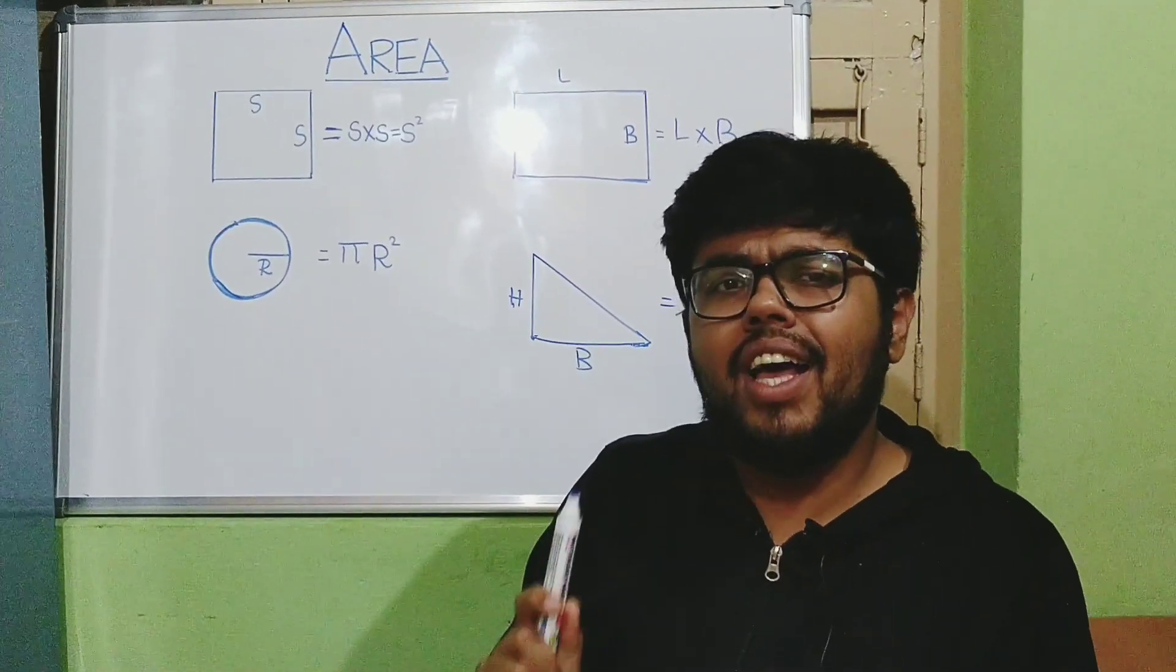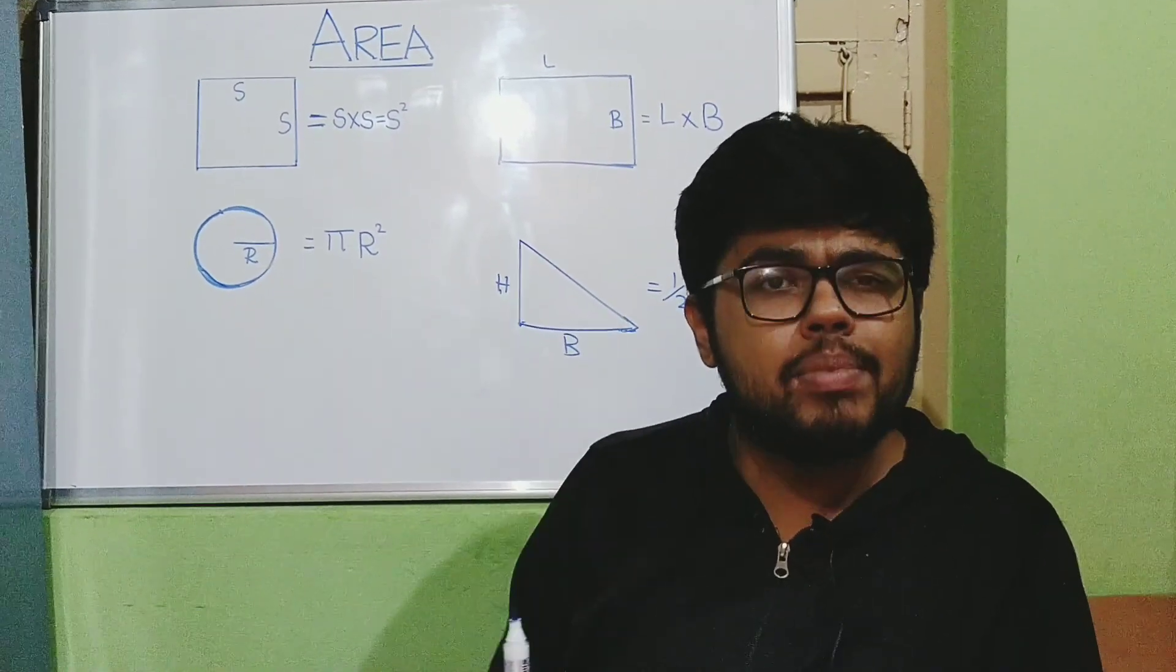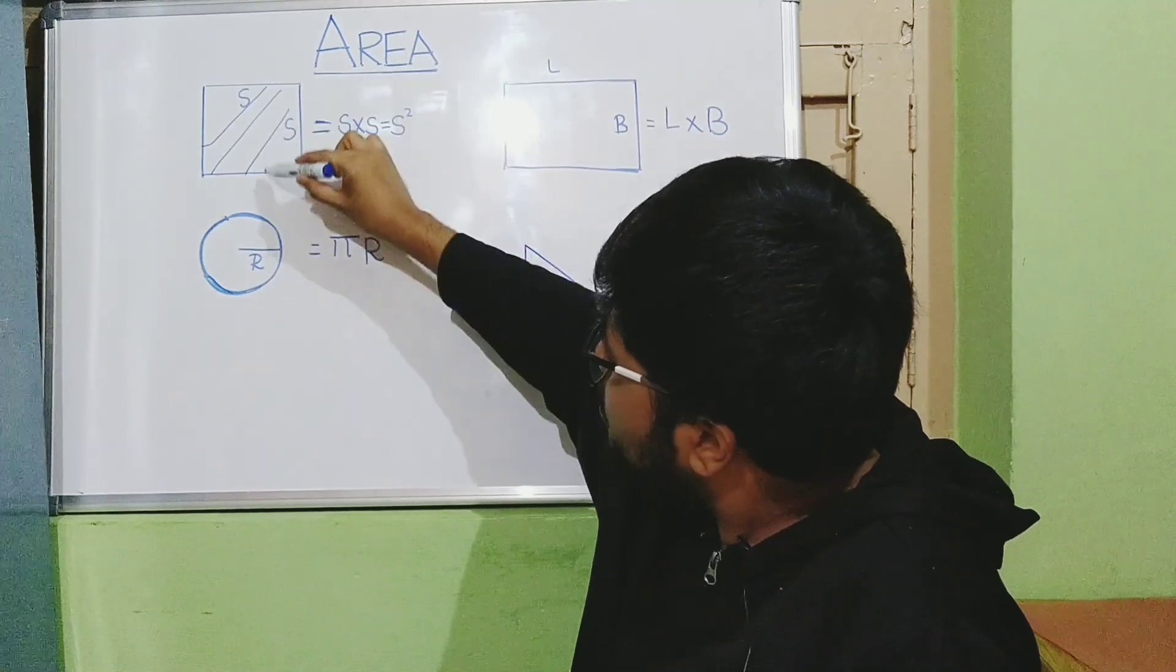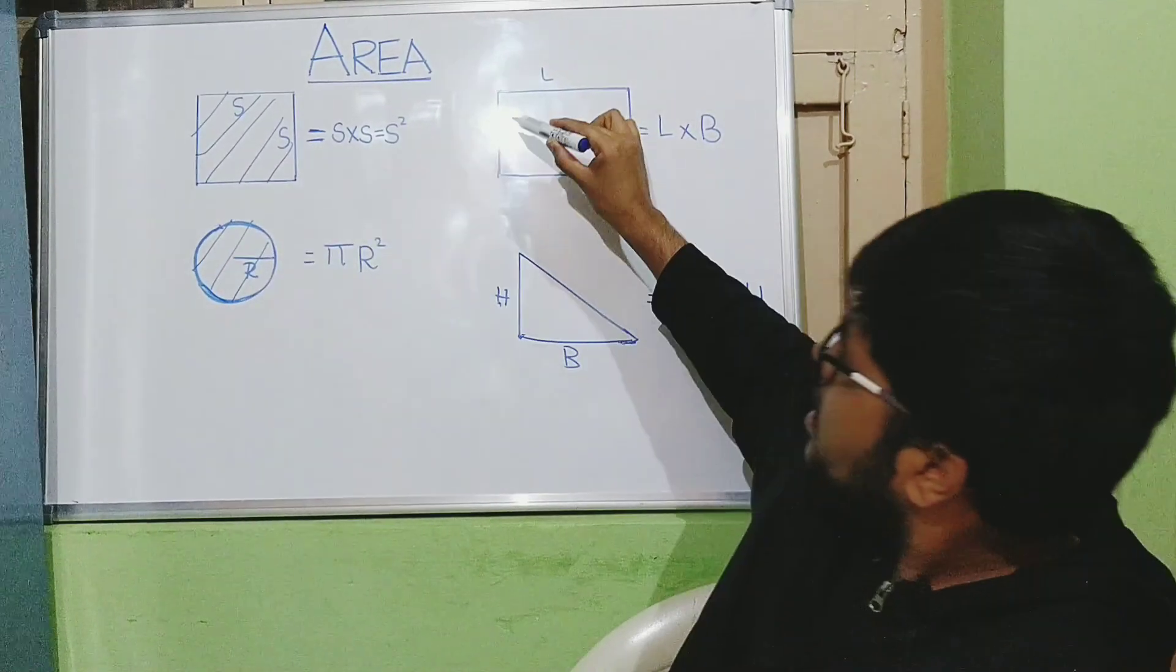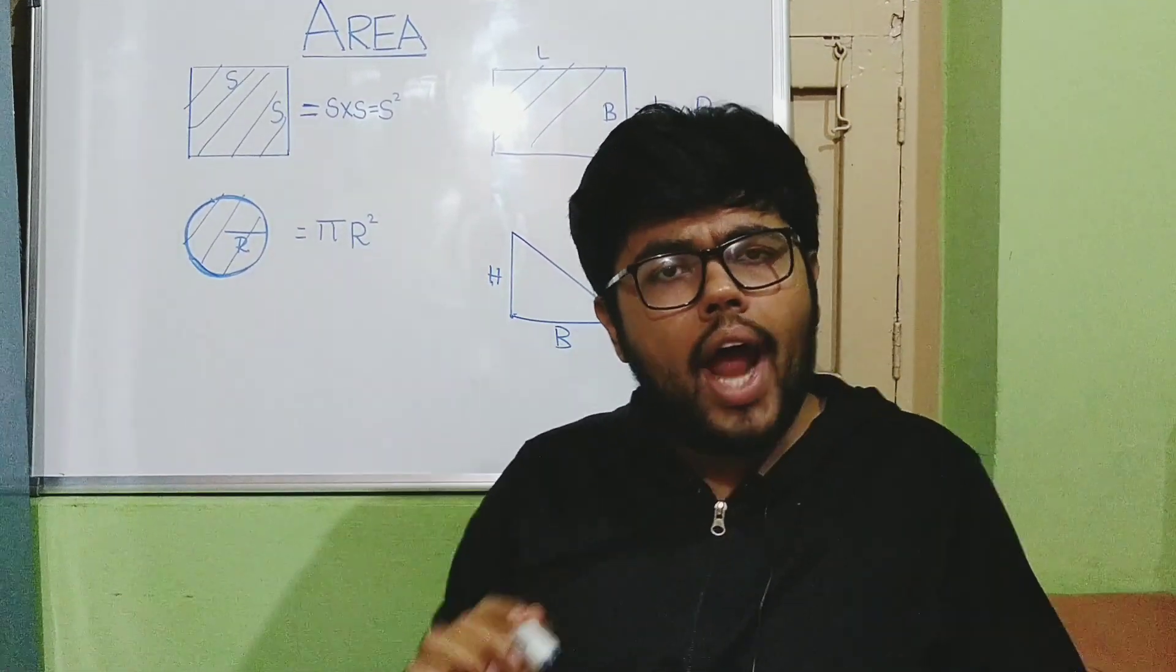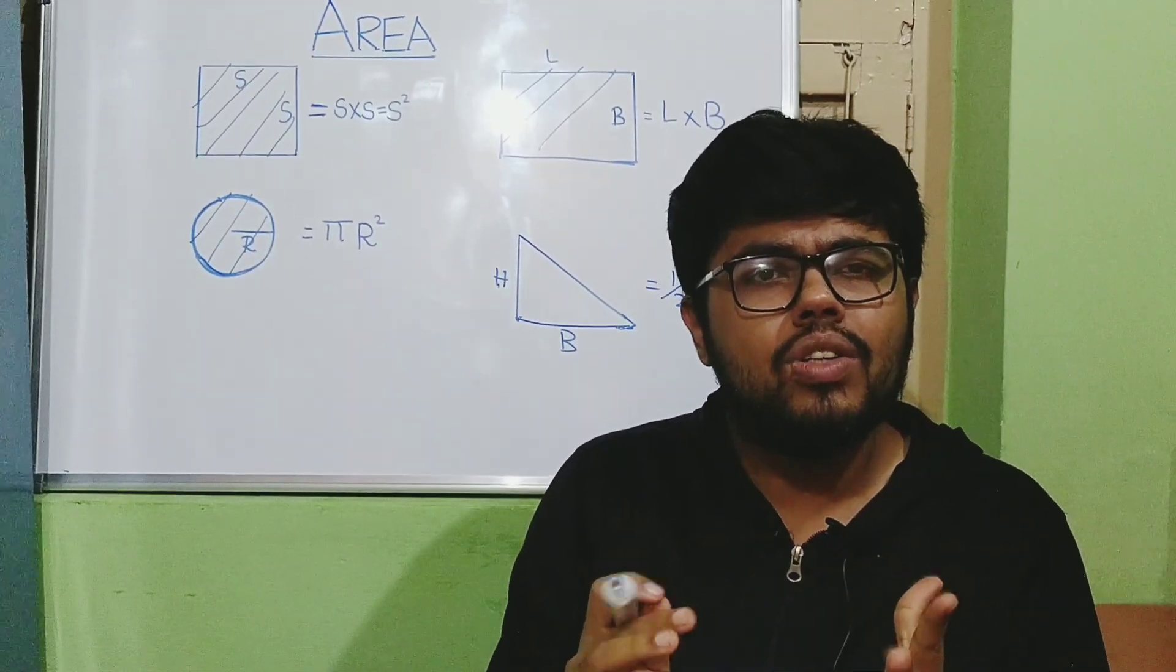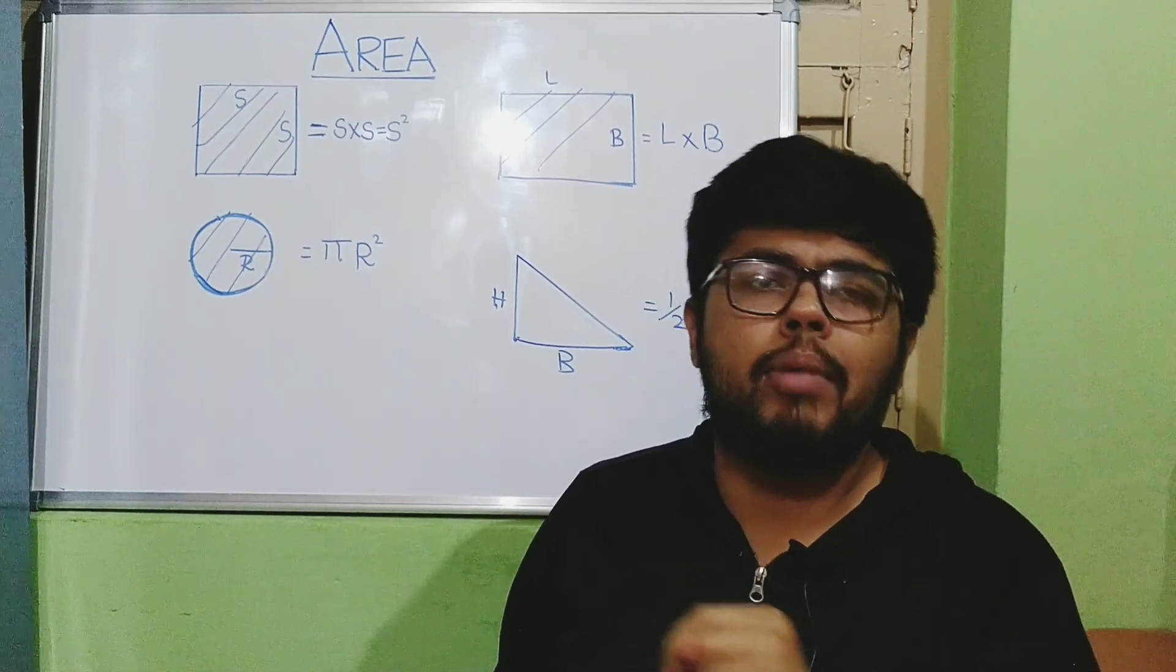Now, coming back to area. What is area? Area is nothing but space covered within these 2D shapes. Now, you can see the space. This space is the area of this shape. And how do you measure area? We need to measure something, no? So, to measure area, it is a multiplication of these two dimensions.